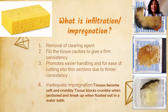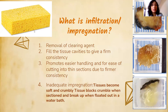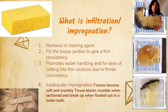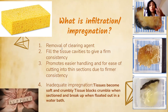Coming from the word 'infiltrate' — to enter — and 'impregnate,' like a pregnant woman has a baby inside her womb: when we say infiltration and impregnation, your tissue, just like a sponge, has holes or cavities. It needs support so it will not crumble upon cutting. You need to fill up those holes with a medium — most commonly paraffin wax — to provide support so the tissue will not crumble. That is the main function of infiltration and impregnation.